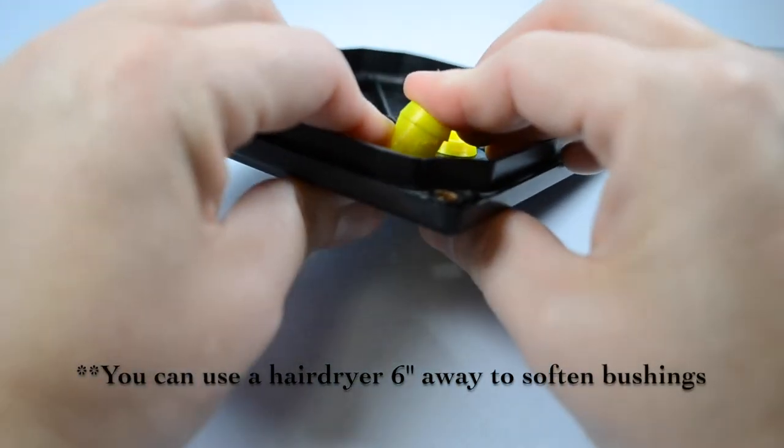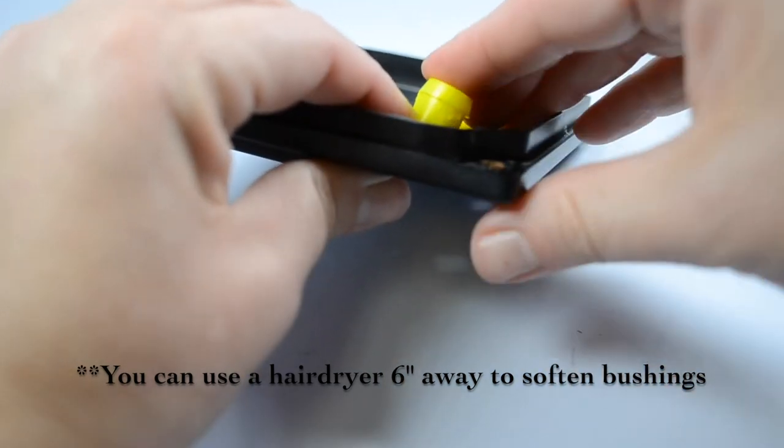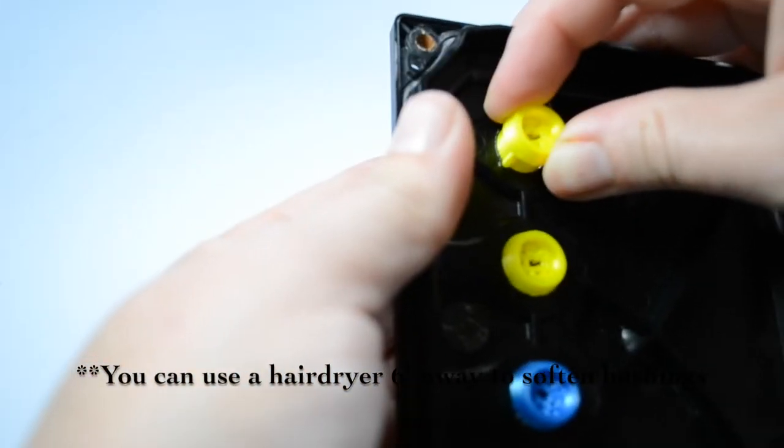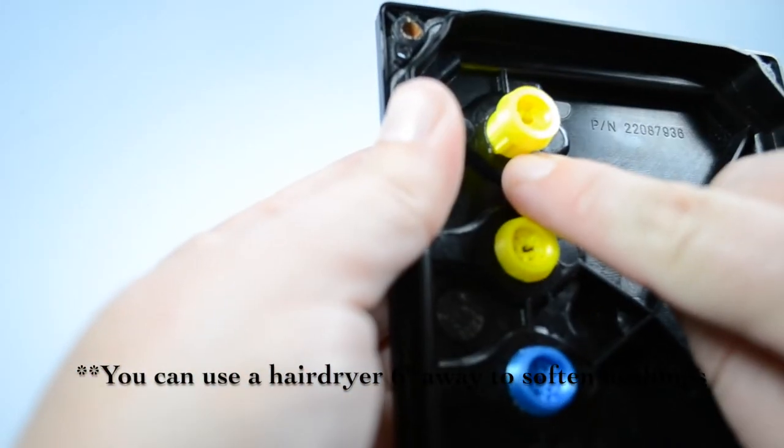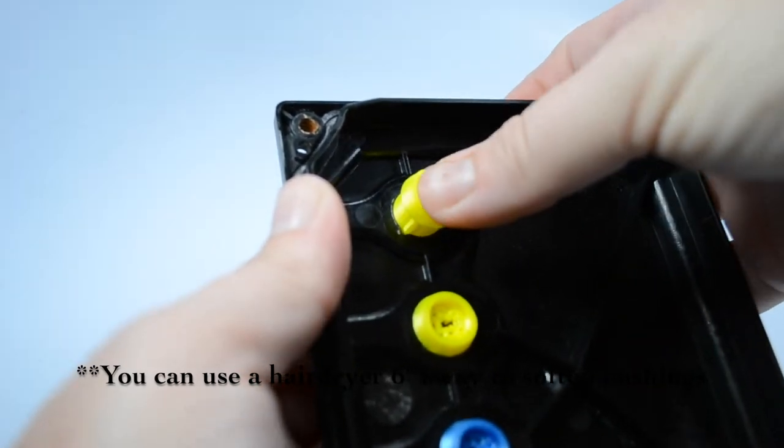Gently squeeze the new bushings through the port on the back of the control unit by pushing the lip and pushing it through at an angle. It's going to be a tight fit so you're going to want to use the small flathead screwdriver to help push the top of the bushing through if needed.